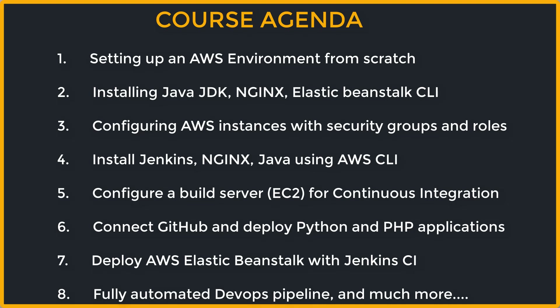You will learn configuring AWS instances with security groups and roles, installing Jenkins using AWS shell, and implementing a build server for continuous integration. You will also learn how to connect GitHub as a source repository for Python and PHP applications, and deploying AWS Elastic Beanstalk with Jenkins CI to complete the DevOps pipeline, and much more.